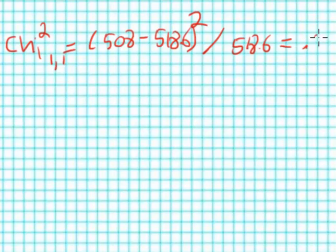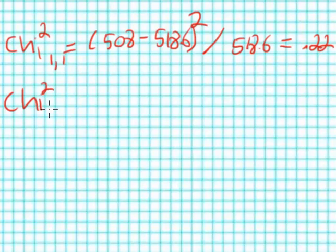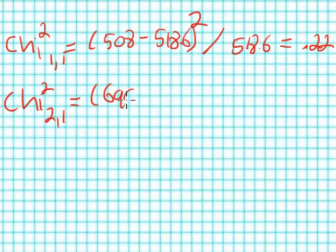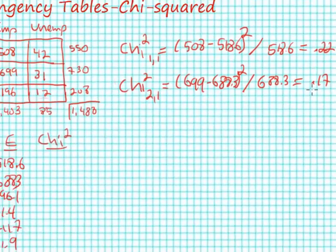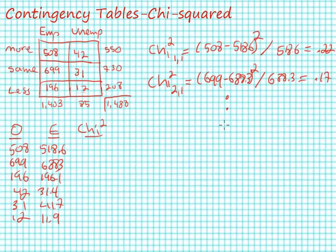Squaring that value and dividing by 518.6 gives us a chi-square value of 0.22. The chi-square statistic for cell (2,1) is (699 − 688.3) squared divided by 688.3, and that gives a chi-square value of 0.17. I will now do this for all the cells.